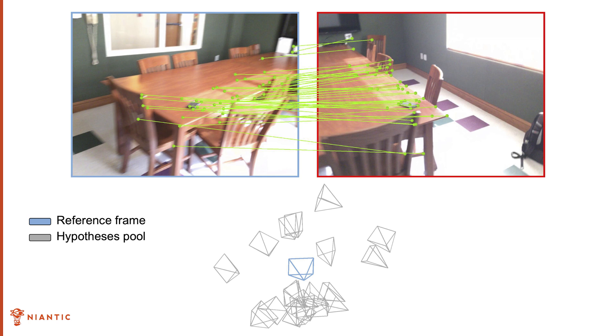In this example, inlier counting selects the pink frustum, a camera pose within a large cluster of similar hypotheses. However, this estimate is wrong. The correct pose is the red frustum.